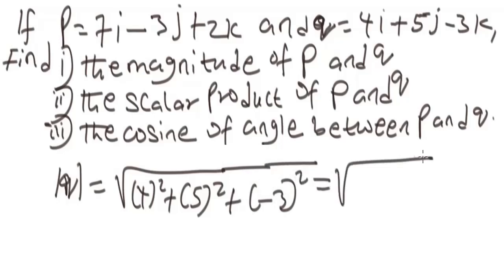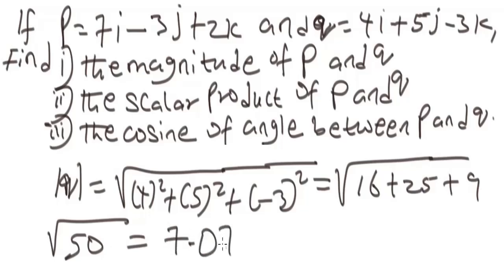We are going to have square root of 50. If we break this down, it is going to give us 7.07. This will be the magnitude of vector Q. So it is as simple as that, guys.